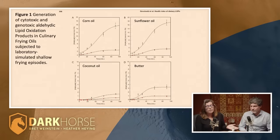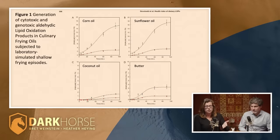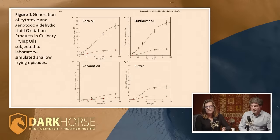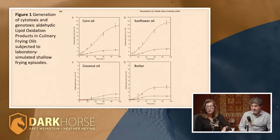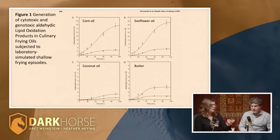You can see right off the bat that corn oil and sunflower oil have much higher rates of production of these cytotoxic and genotoxic aldehyde lipid oxidation products than coconut oil or butter. And it's even worse than you think, because coconut oil and butter have y-axes that are half as short. They actually had to extend the y-axis on the high-polyunsaturated-fat oils to get anything readable, which means this is even worse than it looks.